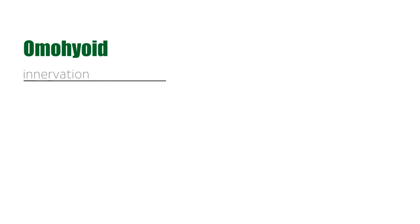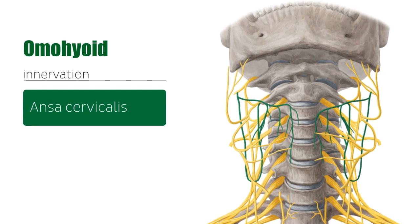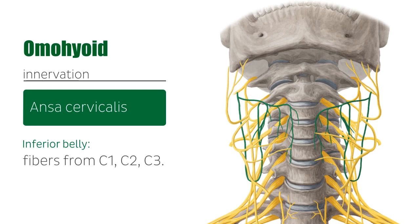Now let's look at the innervation of the omohyoid. The omohyoid is innervated by a branch of the cervical plexus called the ansa cervicalis, shown here highlighted in green from an anterior view. The inferior belly of the omohyoid is innervated by branches of the three cervical rami C1, C2, and C3 that make up the ansa cervicalis.